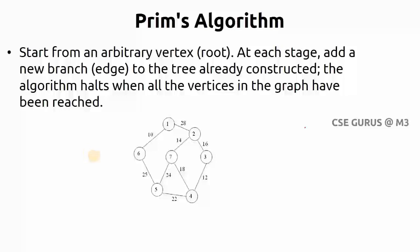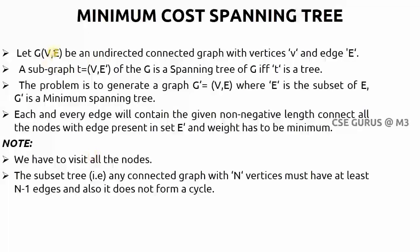Let us consider a graph G consisting of vertices V and edges E — an undirected connected graph. A subgraph which is a tree, where you cannot find any cycle, consists of the same number of vertices but fewer edges compared to the original graph G. This is called a spanning tree. So from a graph you are getting a tree — that is a spanning tree. The problem is to generate graph G' of V and E', where E' is a subset of E, and G' is the minimum spanning tree.